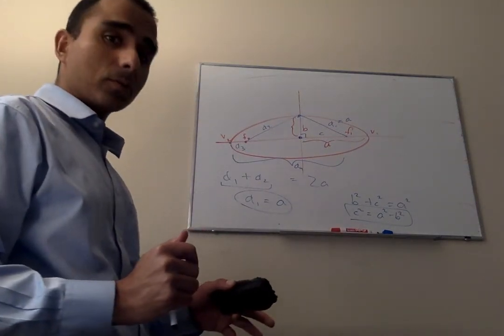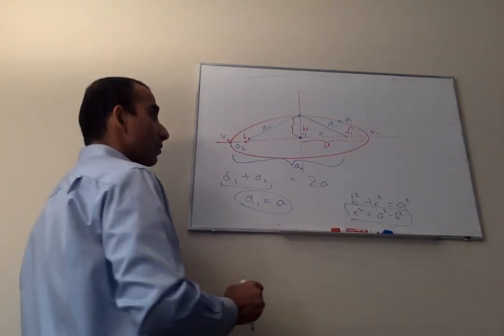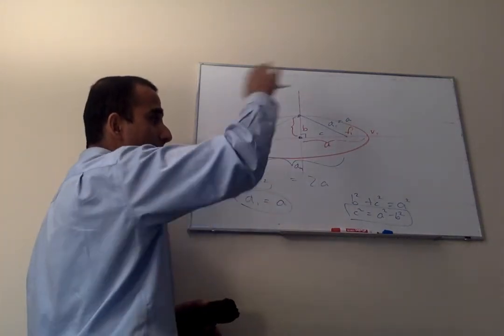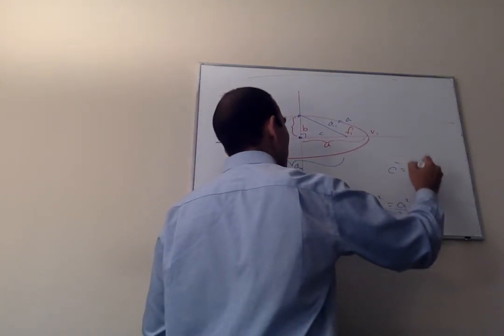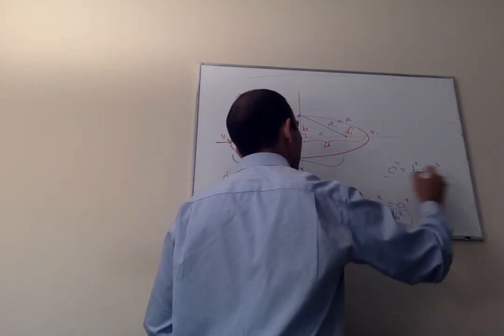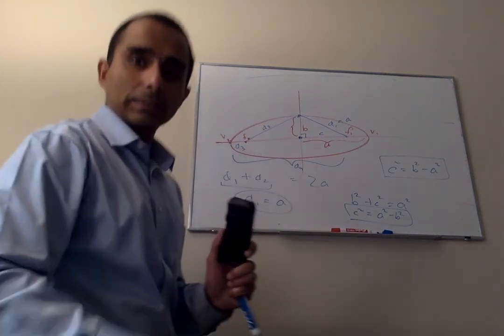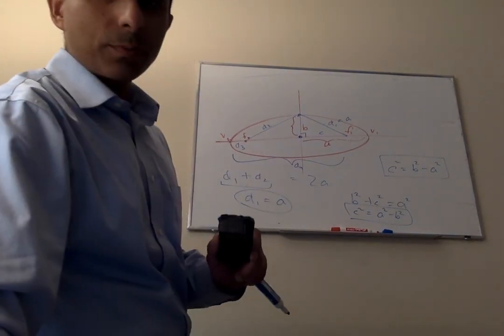C squared equals A squared minus B squared. If you have an ellipse that's vertically aligned, then that equation becomes C squared equals B squared minus A squared. Okay, so that's the ellipses. We're going to do hyperbolas next.